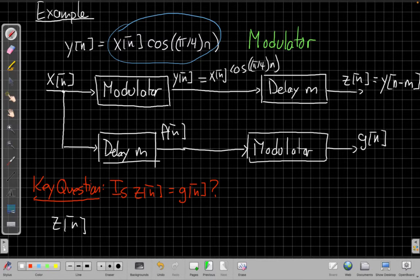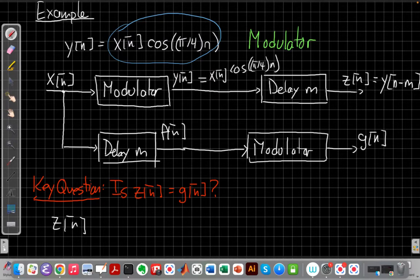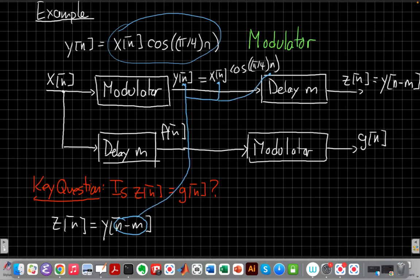And now to make this work out I'm going to come down here and say actually maybe I should write out everything I just had. So I'll start with z[n]. So z[n] is y[n-m] and now I'm going to plug that n-m into this equation up here.